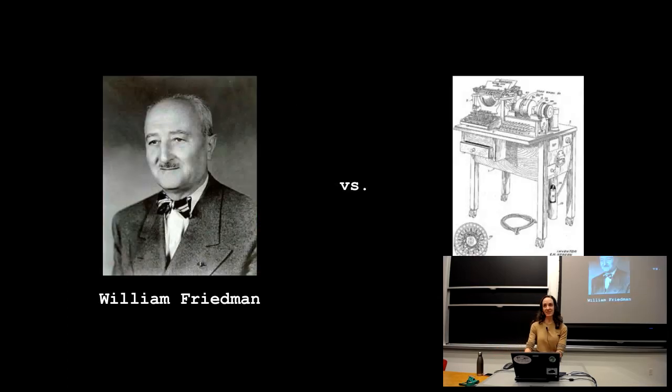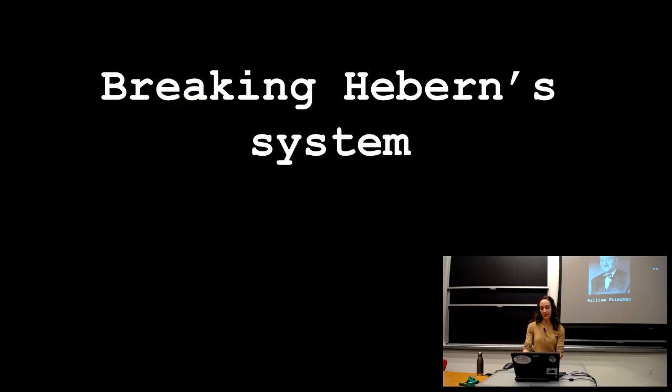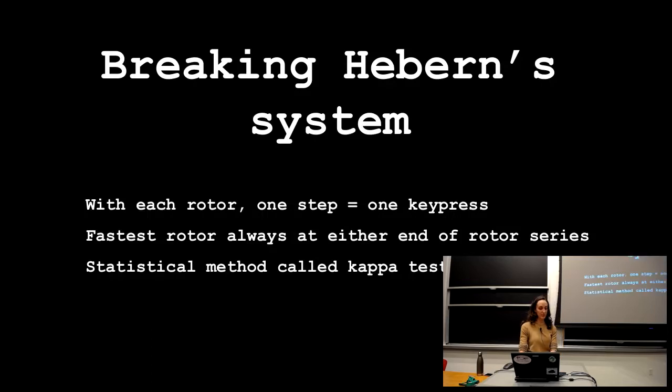So once Hebern invented this system, a mathematician named William Friedman went up against this algorithm or this system to try and break it. And he was able to do so, it took some effort and some time, but he relied on a few different things. So in order to break Hebern's system, he had some knowledge of how the rotating cuffs worked. And he realized that for every single rotor, if you had one step, that was equivalent to one key press. And then he also figured out that the fastest rotor was always at either end of the series. And he also used a statistical test, and I won't get into the details here. But basically, through knowledge of how the mechanics worked, he was able to break this system so that he could decode messages pretty frequently.